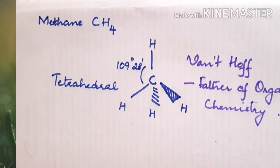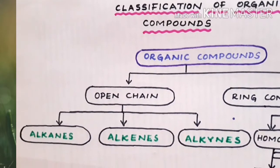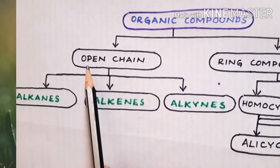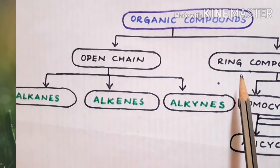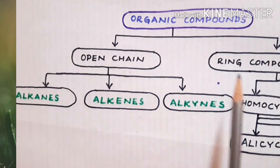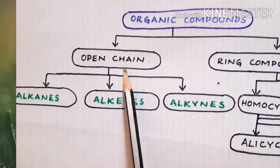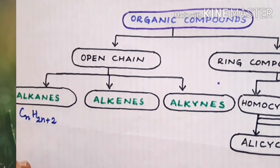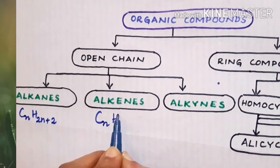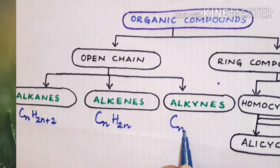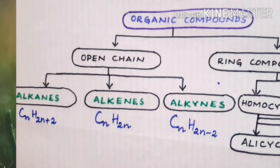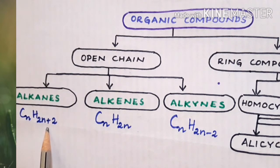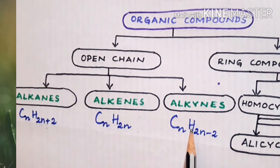Coming to the classification of organic compounds. Organic compounds are divided mainly into two types. In open chain compounds are included alkanes with the general formula CnH2n+2, alkenes with the general formula CnH2n, and alkynes. Here, you find that alkanes are saturated in nature whereas alkenes and alkynes are unsaturated with multiple bonds in the compound.